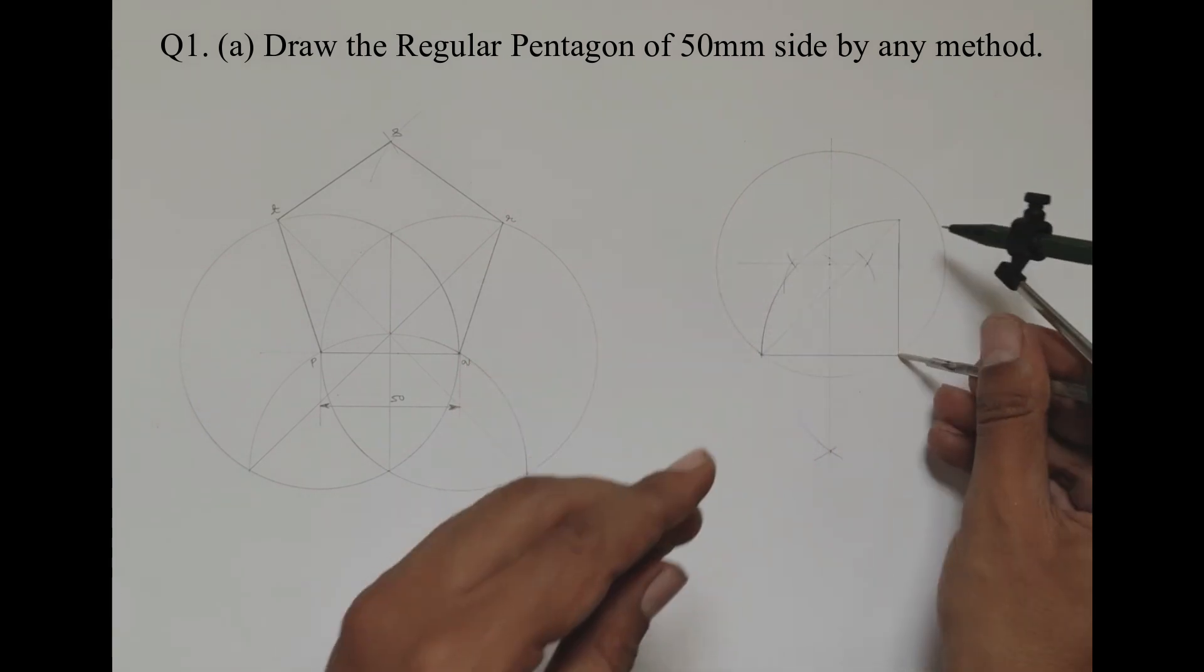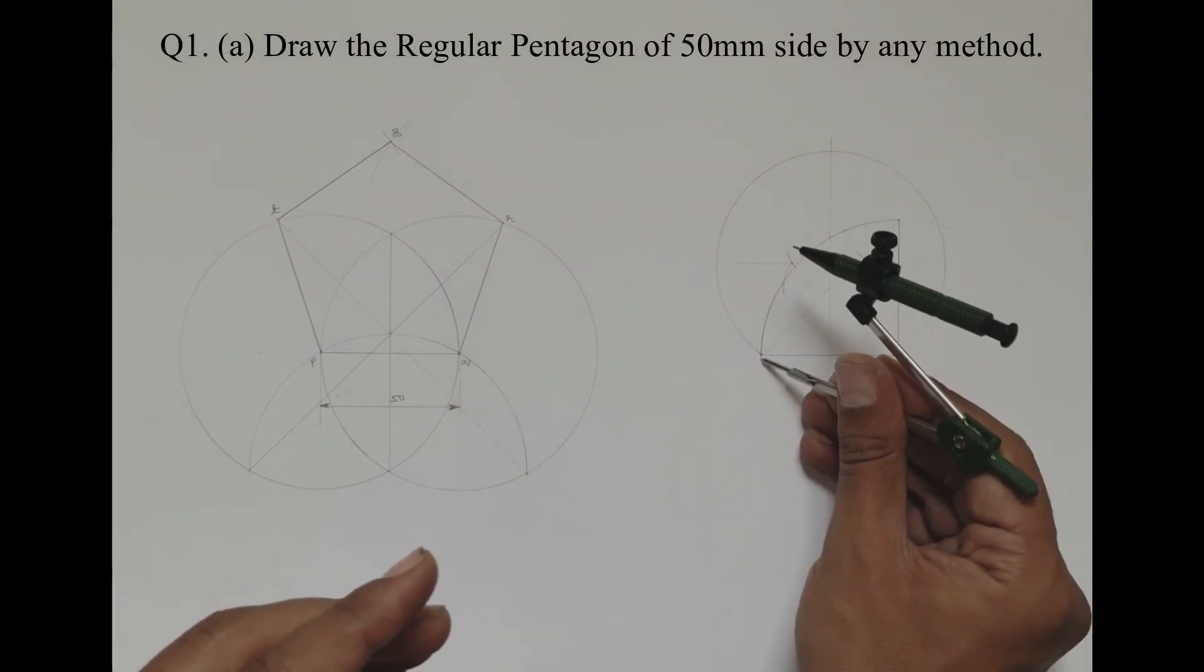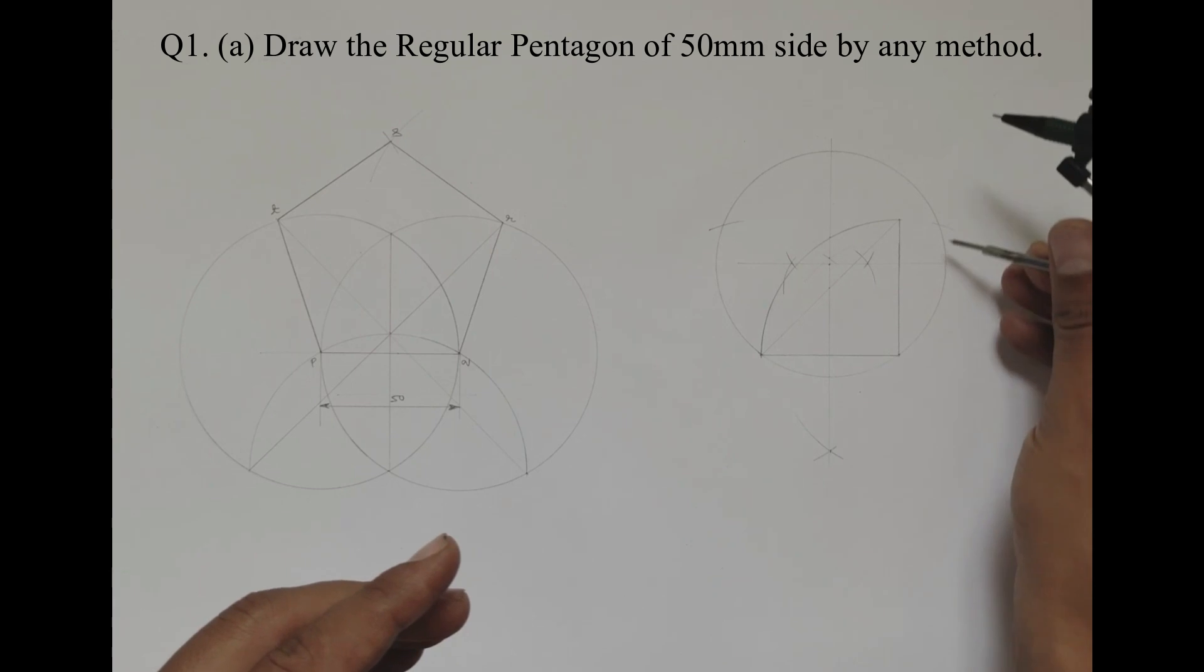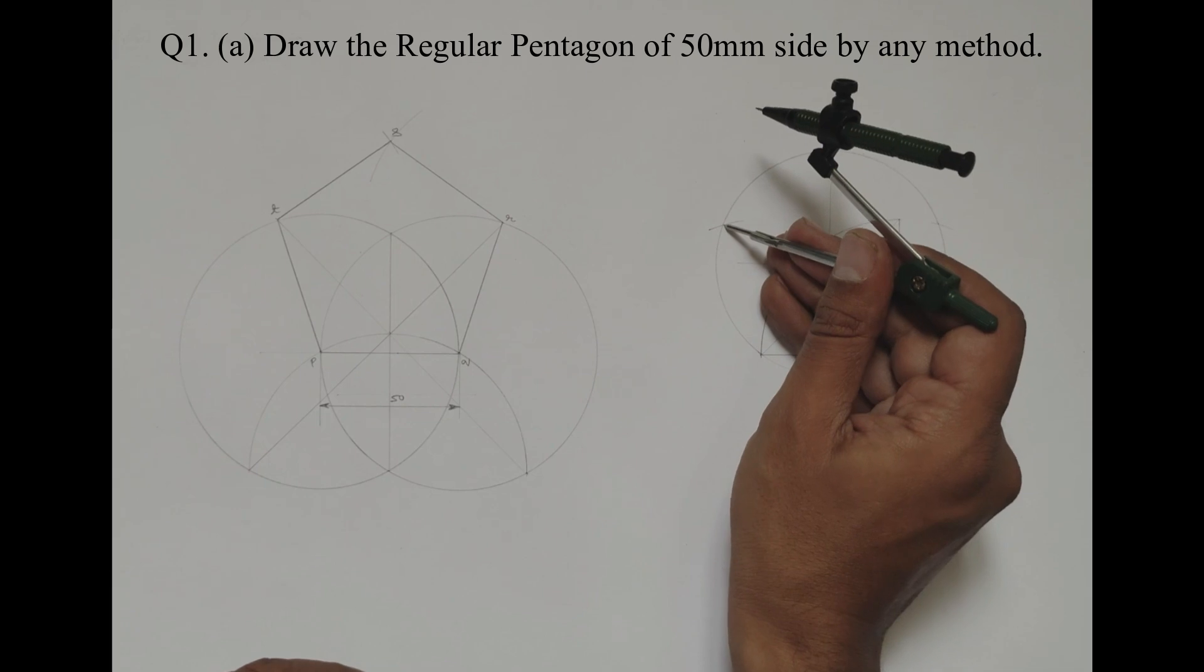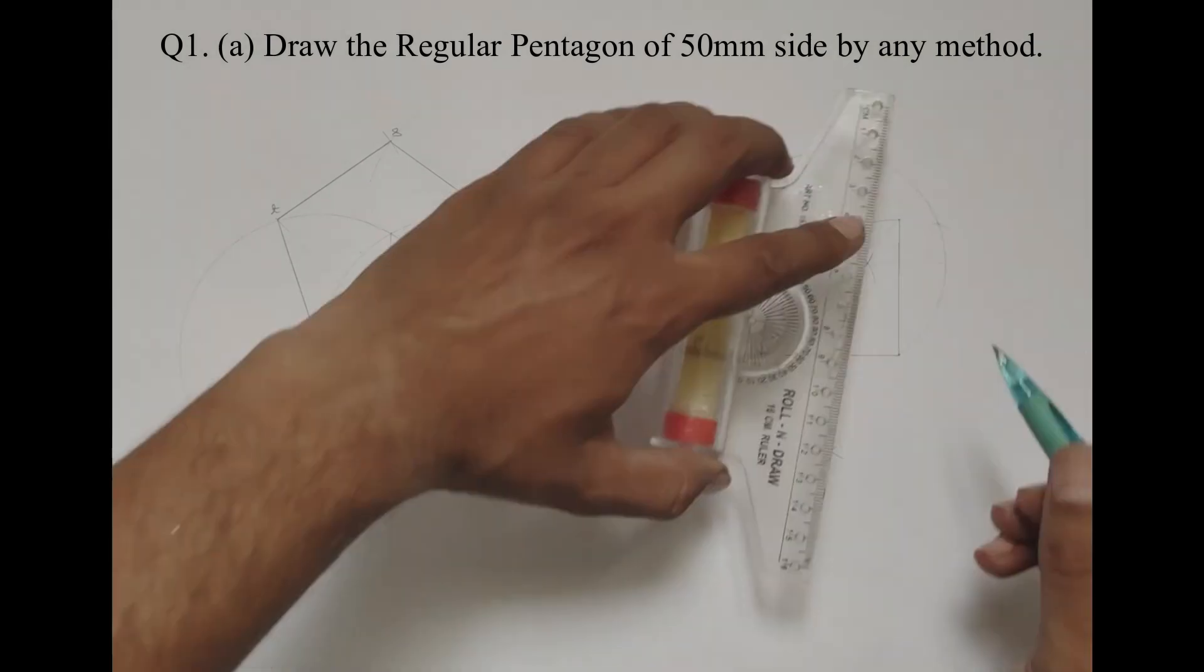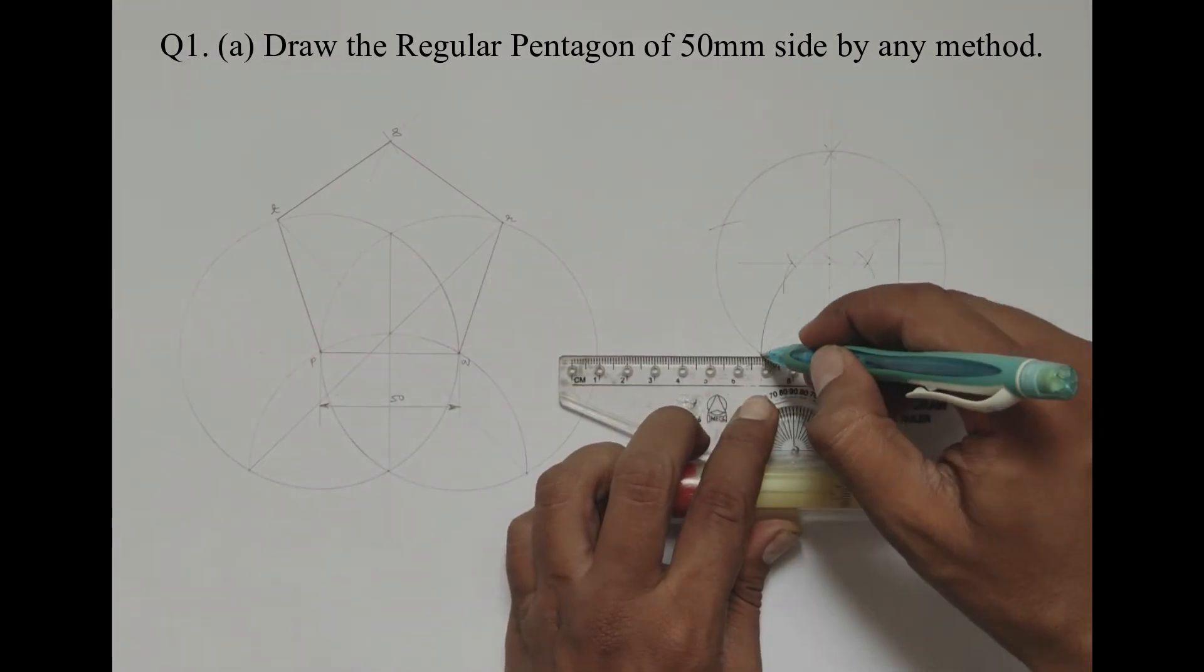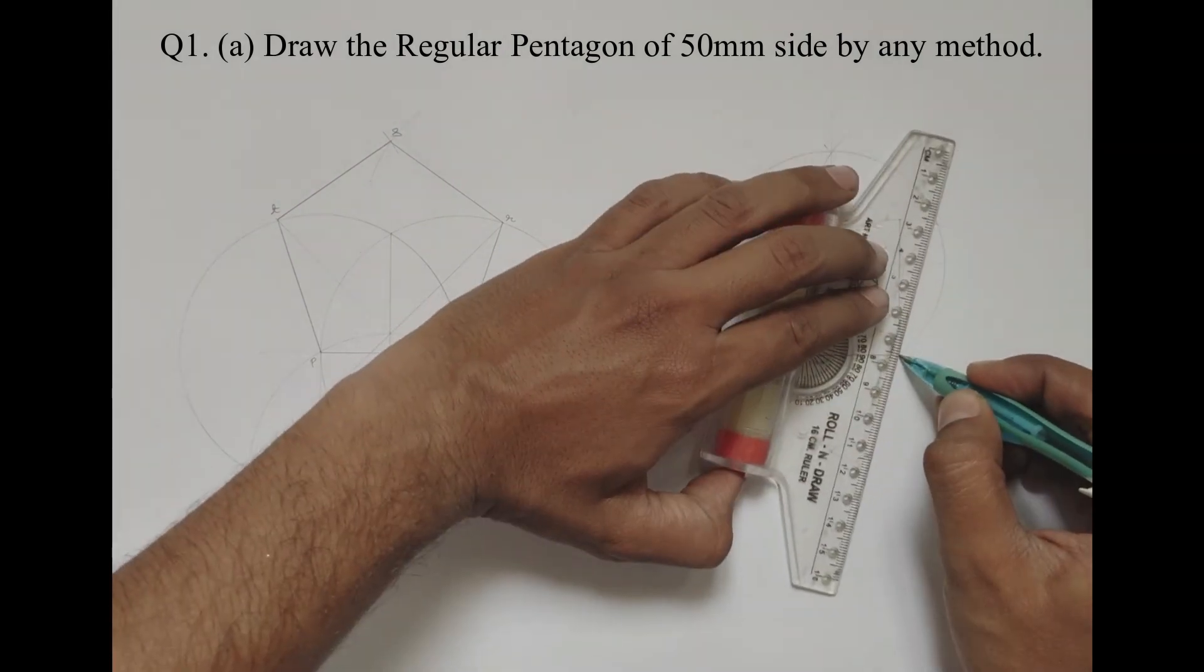Take this horizontal length as 50mm in your compass. Start cutting the arcs on this drawn circle. Joining all these sides, we can complete the pentagon.